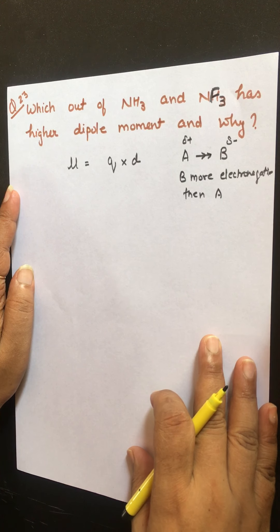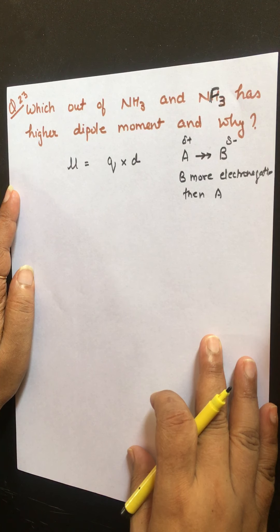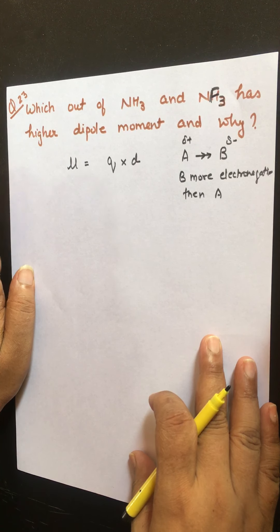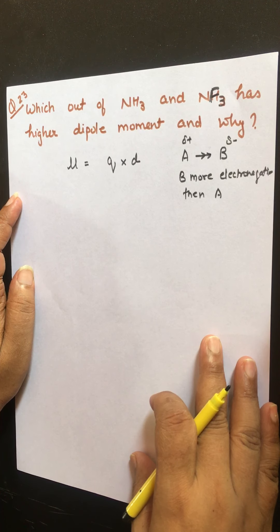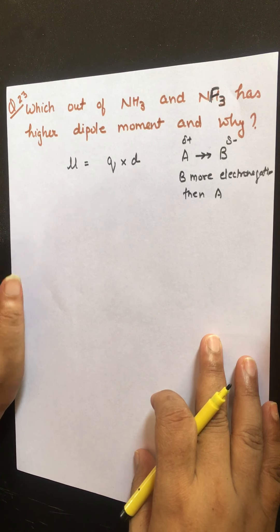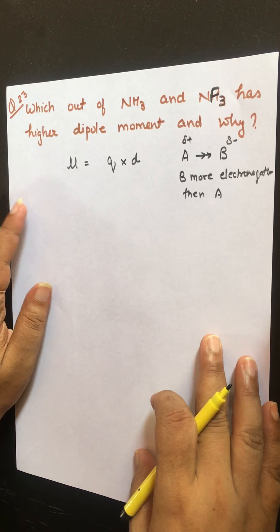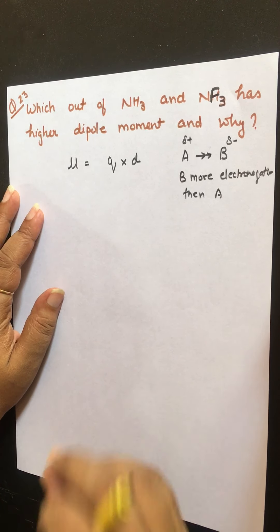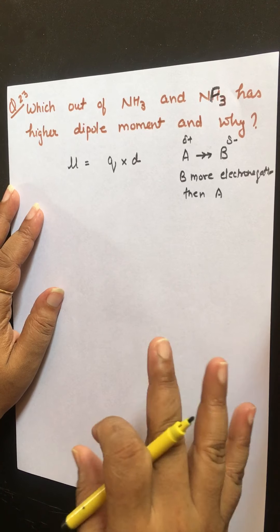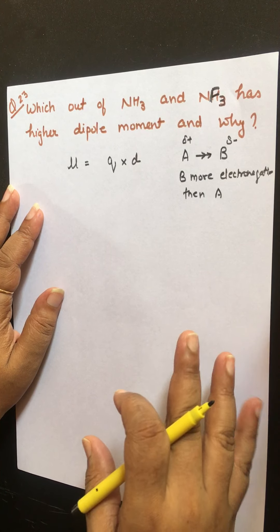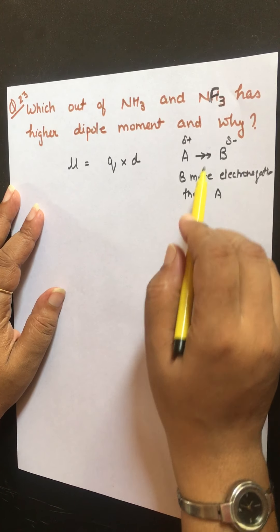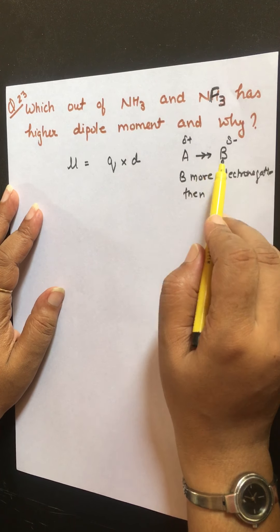This is question number 23 of the NCERT exercise: which out of NH₃ and NF₃ has a higher dipole moment, and why? To understand it, firstly we need to know in short what dipole moment is.